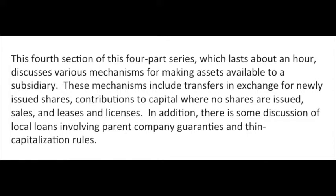This is the fourth section of a four-part series, lasting about an hour. It discusses various mechanisms for making assets available to a subsidiary. These mechanisms include transfers in exchange for newly issued shares, contributions to capital where no shares are issued, sales, leases and licenses, as well as local loans involving parent-company guarantees and thin capitalization routes.